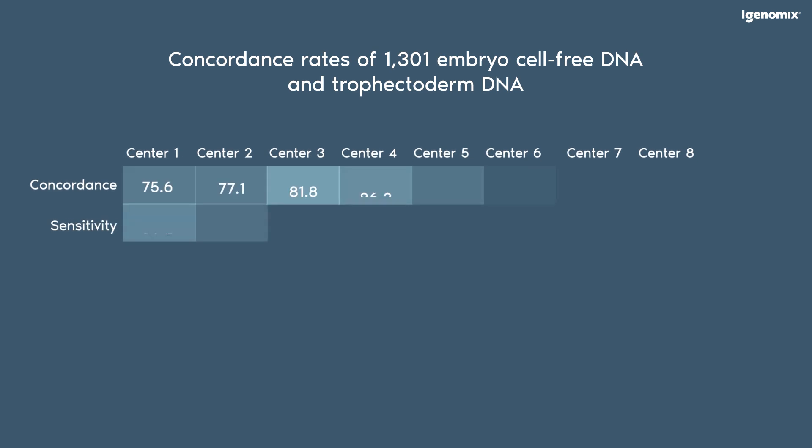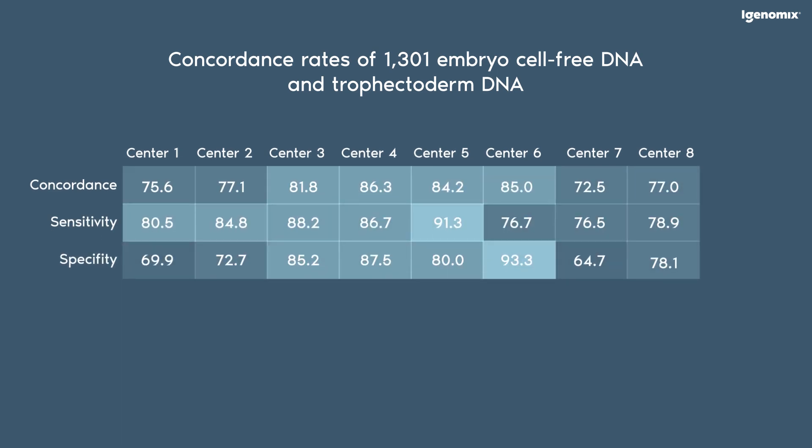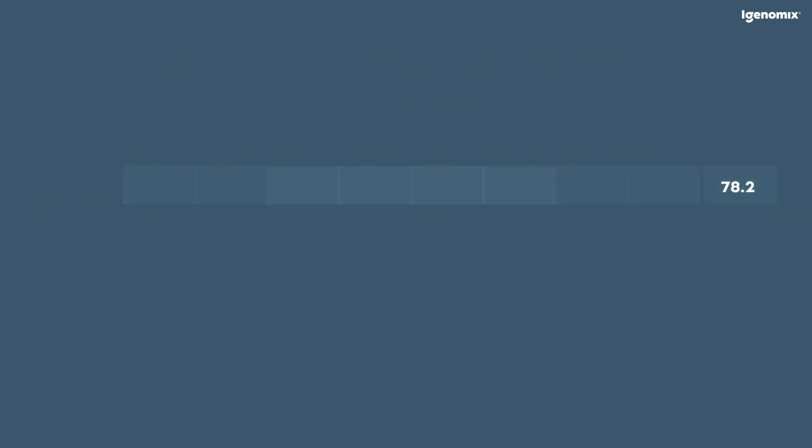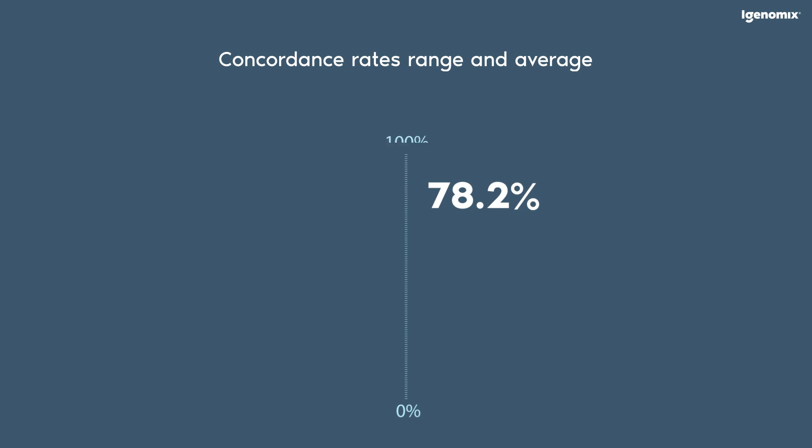The results of the non-invasive analysis of embryo cell-free DNA from spent blastocyst medium demonstrated a high concordance rate with the trophectoderm biopsy results. The concordance rate was on average 78.2%, ranging from 72.5% to 86.3% in different centers, without significant differences among centers related to culture conditions or blastocyst quality.